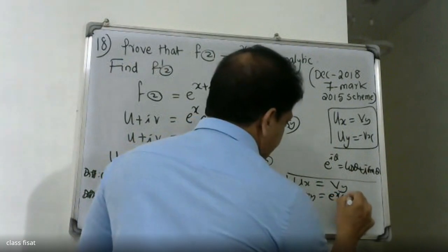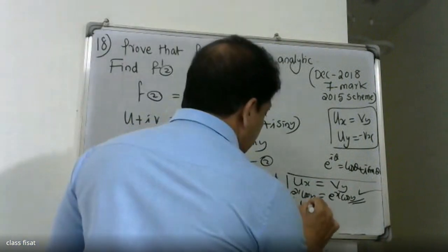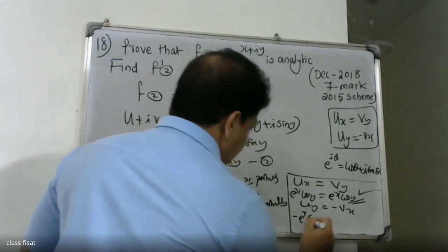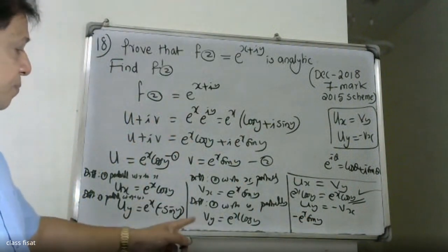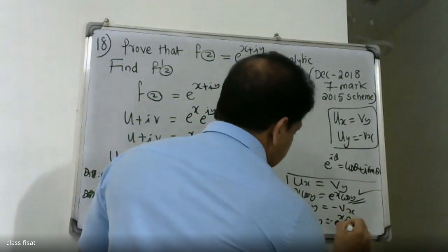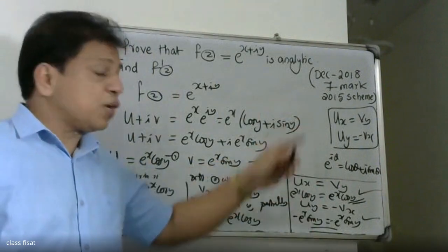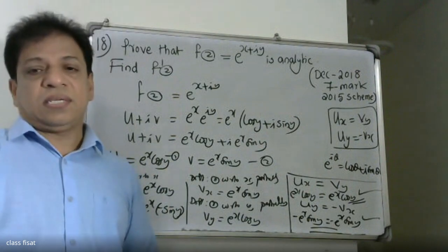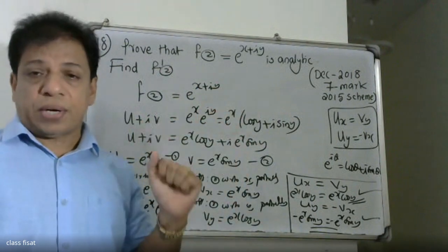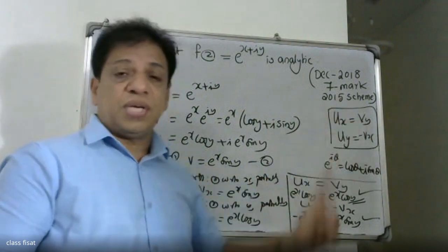Now checking: ∂U/∂y = -e^x·sin(y) and ∂V/∂x = e^x·sin(y), so ∂U/∂y = -∂V/∂x.